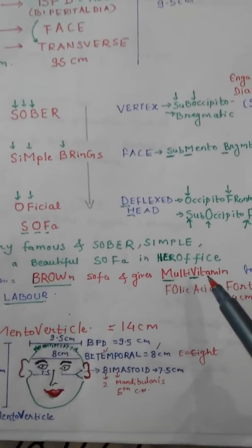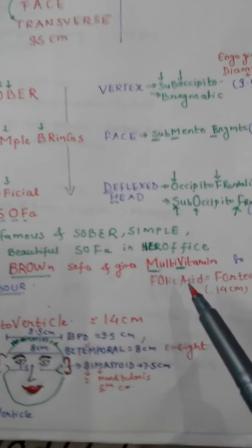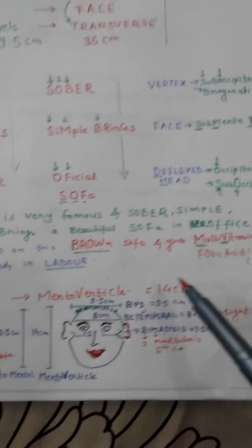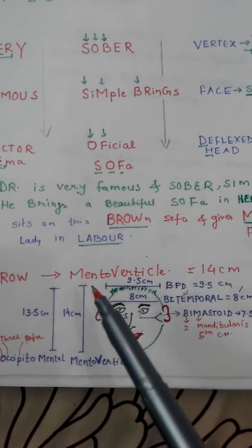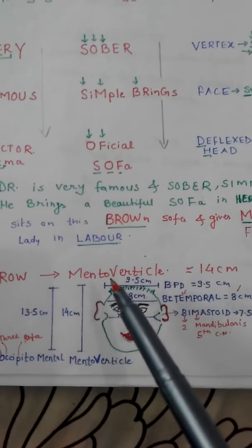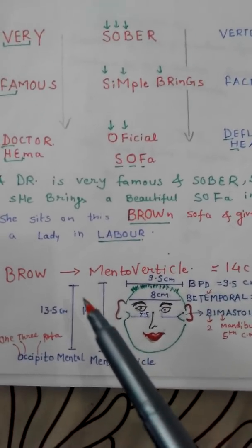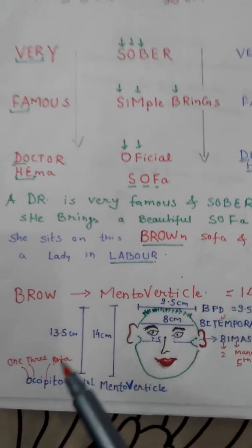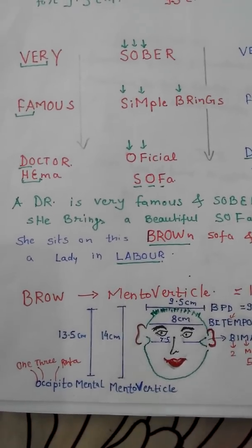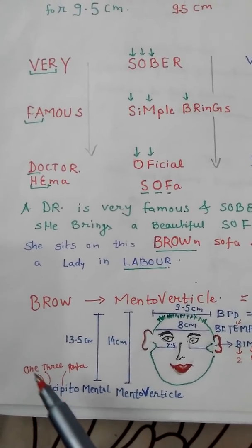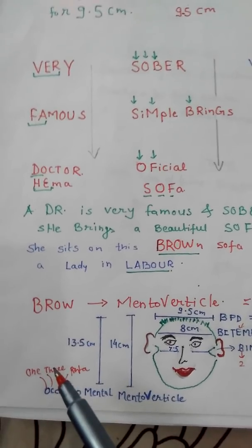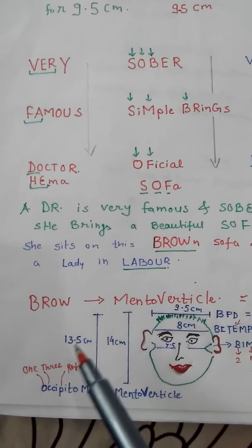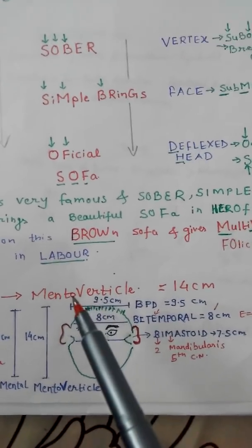She gives multivitamin — here multivitamin is folic acid. Intentionally: 'fo' is 14 because if you spell 14, 'fo' gives fourteen, and the mento-vertical diameter is 14. For occipitomental at 13.5: O is one, C is the third alphabet so three, and P is penta meaning five — giving 1, 3, and 0.5 — so 13.5.